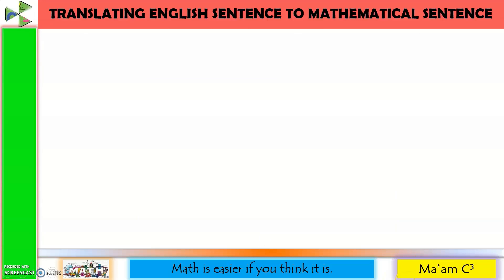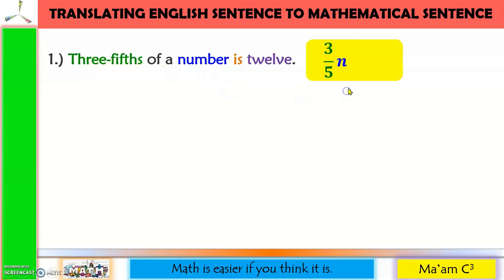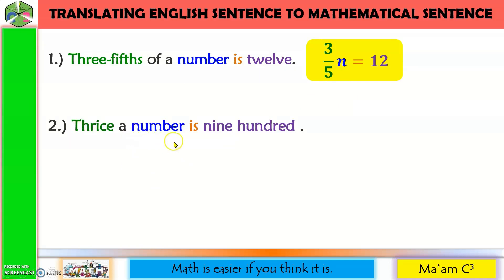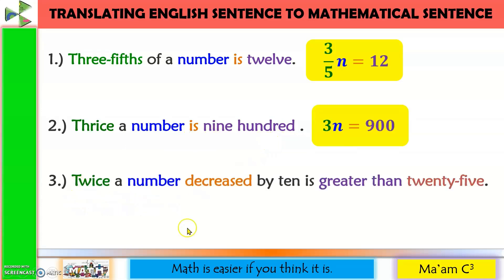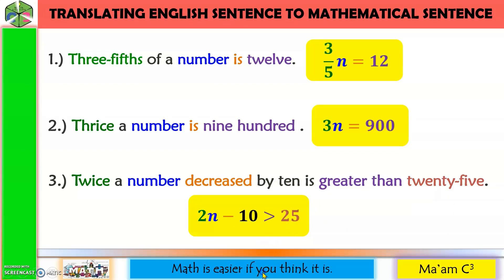Now we will translate English sentences to mathematical sentences. Number one: three-fifths of a number is 12, written as (3/5)n = 12. Number two: thrice a number is 900, written as 3n = 900. Number three: twice a number decreased by 10 is greater than 25, written as 2n − 10 > 25.